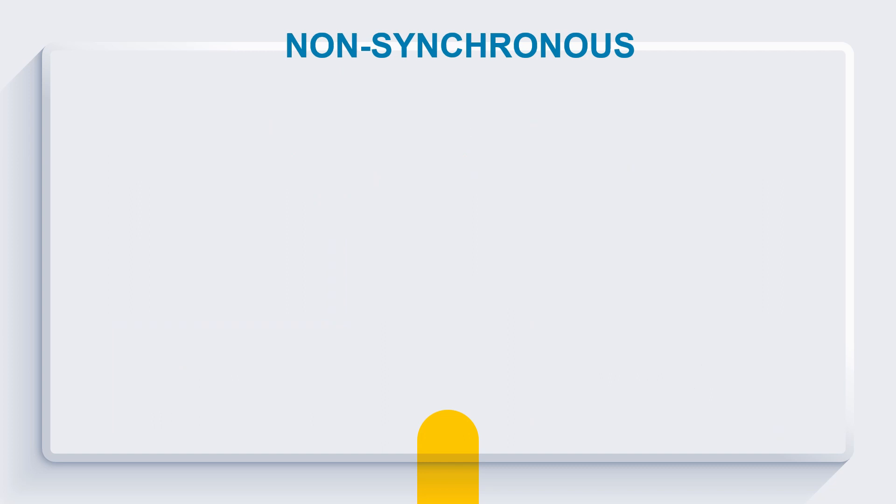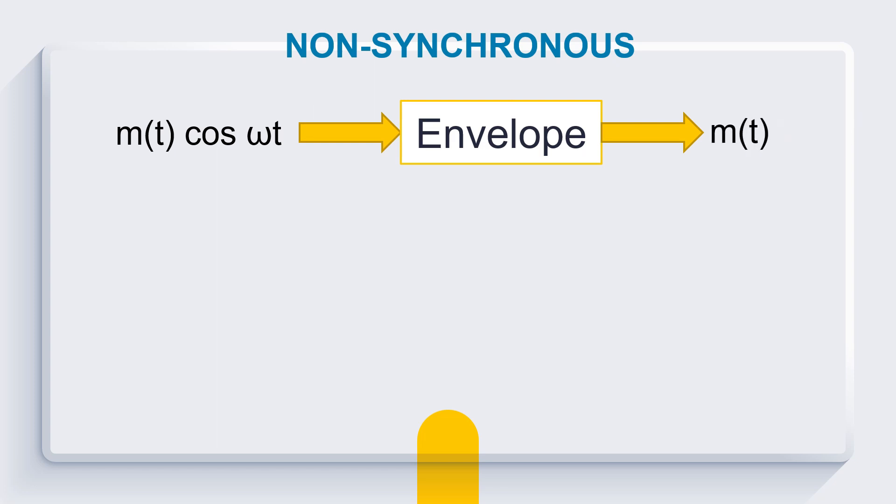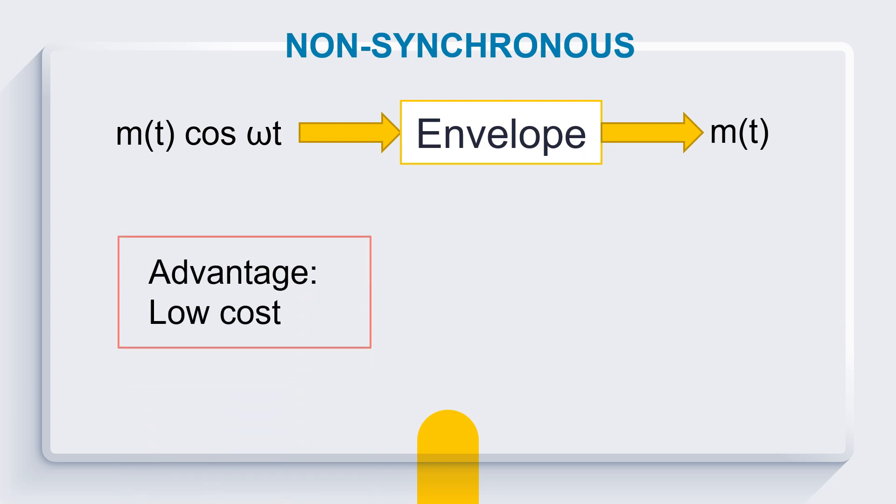While in non-synchronous method, we pass this modulated ASK signal m(t) cosine ωt through our analog detector to generate our original signal. Again, there is still an advantage and disadvantage for this method, wherein this method is low-cost, but performance is poor with less SNR in the received signal.